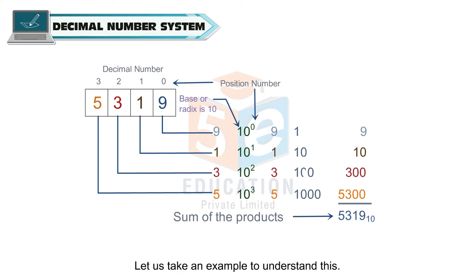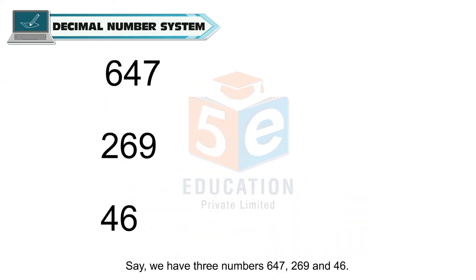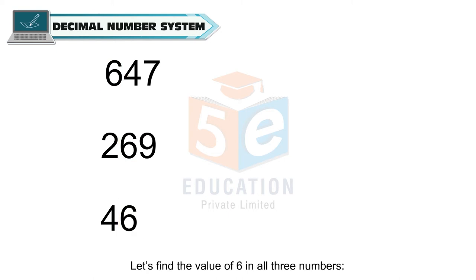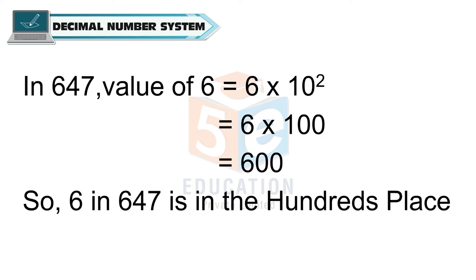Let us take an example to understand this. Say we have three numbers: 647, 269, and 46. We can see that the position of the digit 6 in each of these numbers is different. Let us find the value of 6 in all three numbers. In 647, the value of 6 is equal to 6 × 10² which is equal to 6 × 100, which is equal to 600. So, 6 in 647 is in the 100th place.